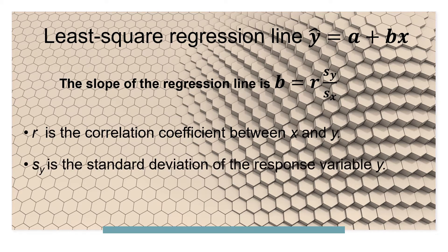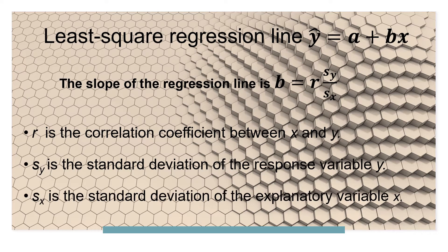And sx is the standard deviation of x. r is the correlation coefficient between the two variables x and y. So the slope of a regression line is b, and that is r times sy divided by sx.